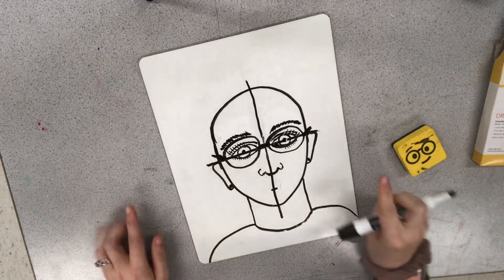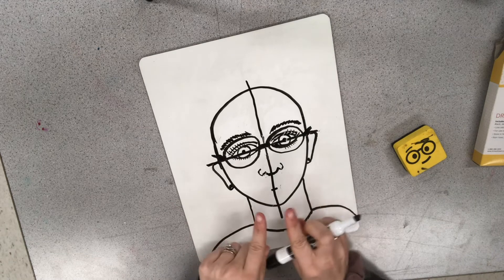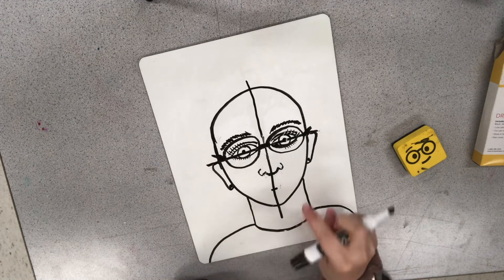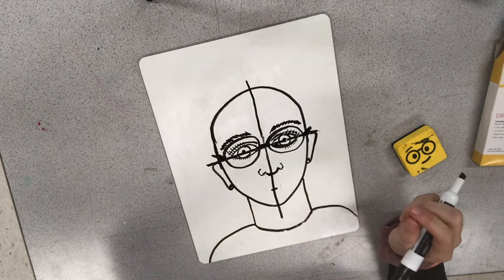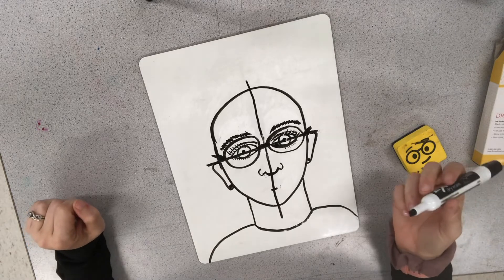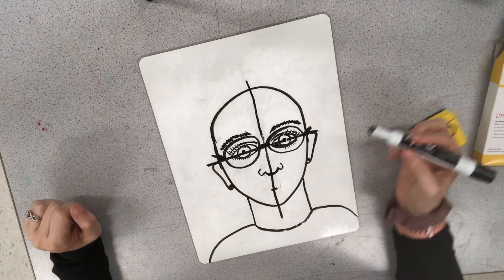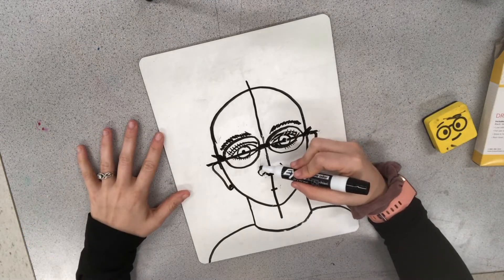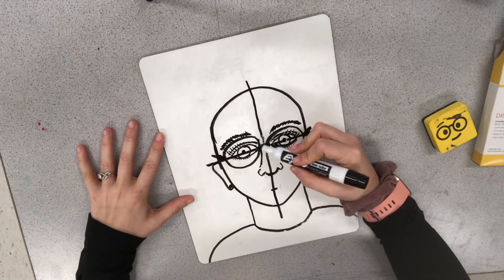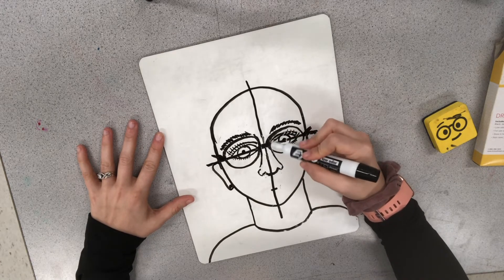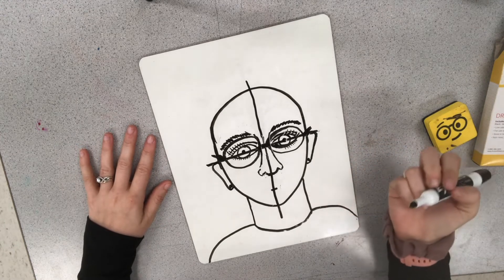So some people's noses are wider, some are skinnier, some are pointier, some are rounder. Look at your person and you can tweak that to make it look like them. Some people like to bring the bridge of the nose up. So you could do that or you can leave it how it was.